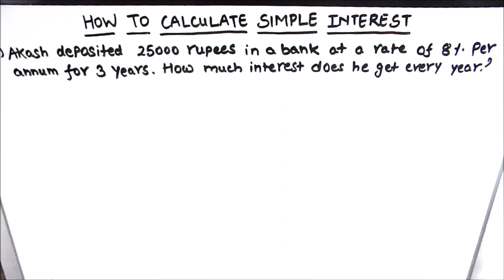Hello students, in this video we are going to learn how to calculate simple interest using a formula. Simple interest is the interest we get when we deposit a particular amount in a bank for few months or years. After the completion of that time period, we get the money we deposited with some extra amount that is called the interest.